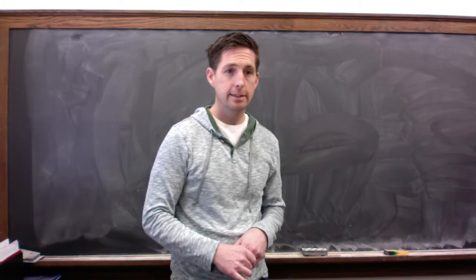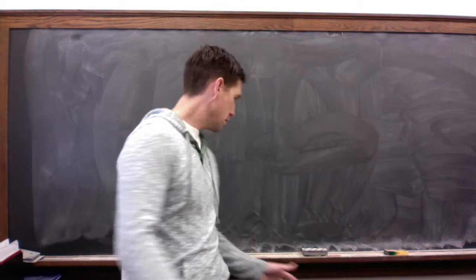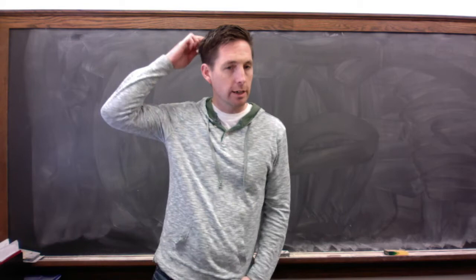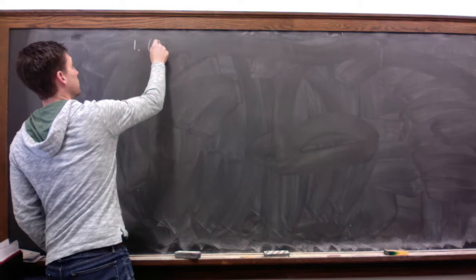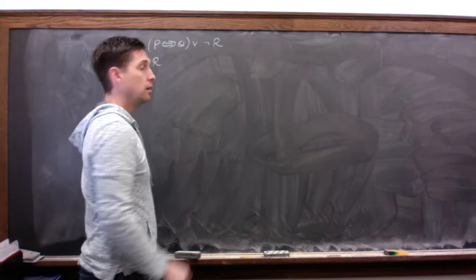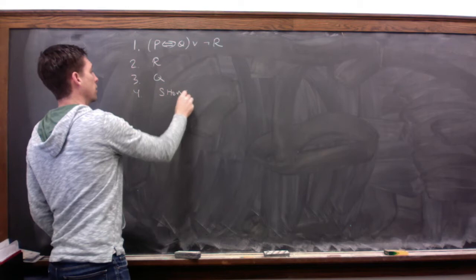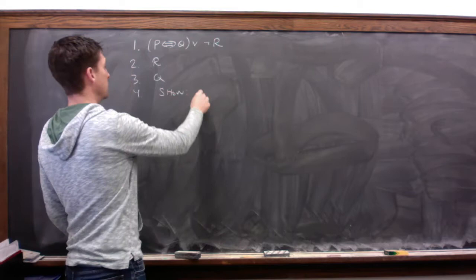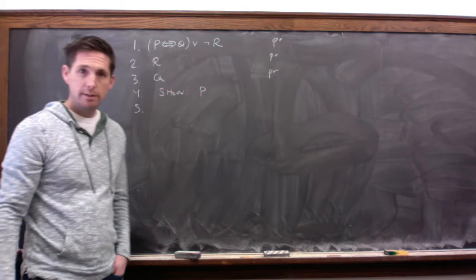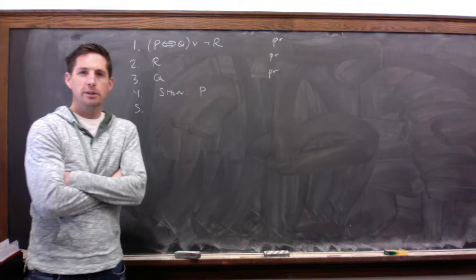All right, so the first example I want to do is the following, and I'm going to just start writing. I'm not going to write the whole argument across the top as I have been. So the first argument we're going to try to derive is the following. Premise one is P by conditional Q or not R. Premise two is R. Premise three is Q. And we're going to try to show that this supports the conclusion P. So again, we write down that these are our premises. That's why we're allowed to write them down. Now we're going to leave the show line open because we don't yet know if we're going to be successful in this proof, although I hope we are.